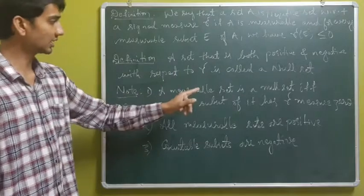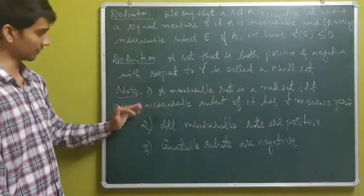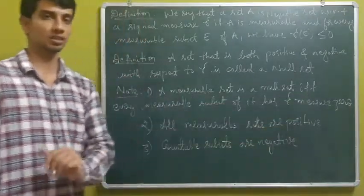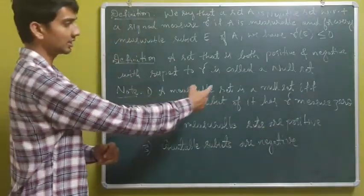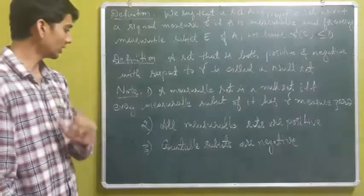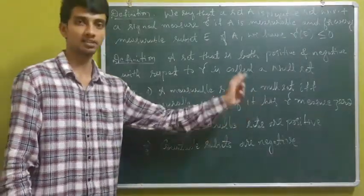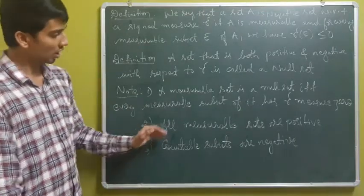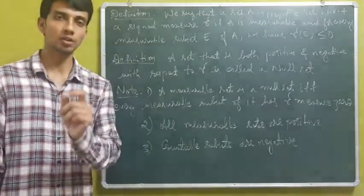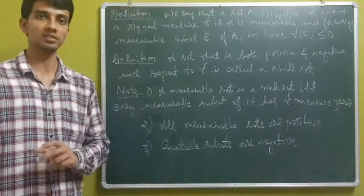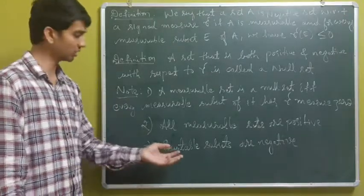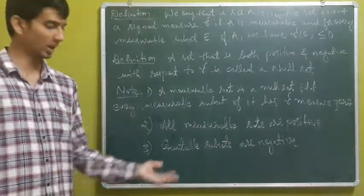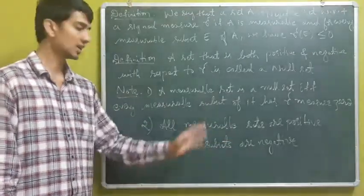Note that a measurable set is a null set if and only if every measurable subset of it has signed measure zero. Also, all measurable sets are positive and countable sets are negative.